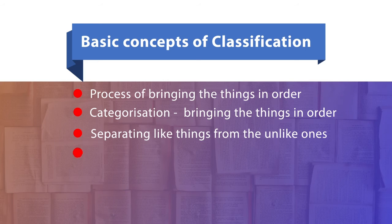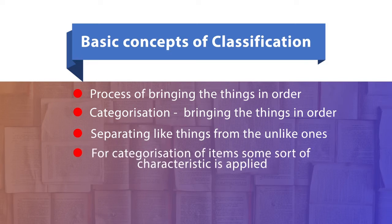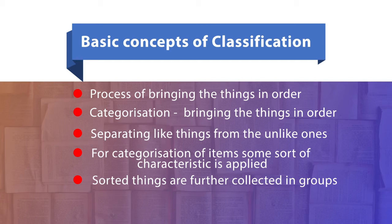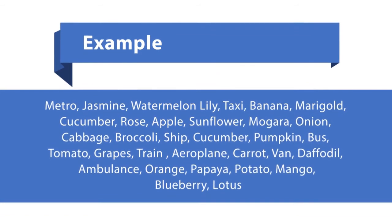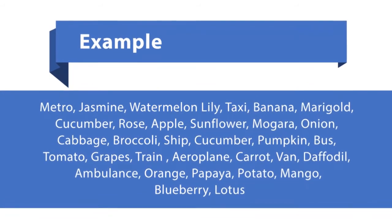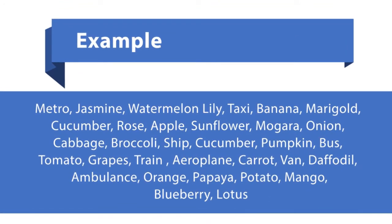For categorization of items, some sort of characteristics is applied. It may be age, it may be gender, language, religion, educational qualification, and so on. The sorted items are further collected into groups. Let's see this example. You can see a lot of chaos in this example. There are fruits, vegetables, mode of transport, flowers. All are mixed and there is no order in it. This is because the items in these examples are from heterogeneous groups.